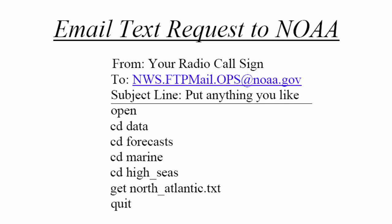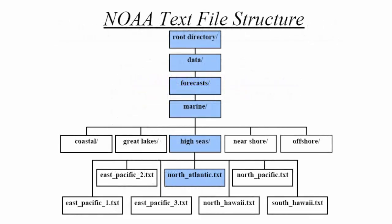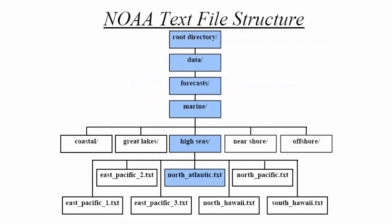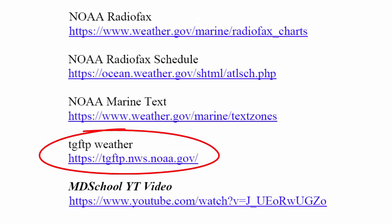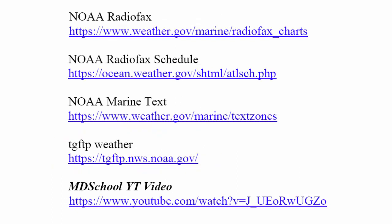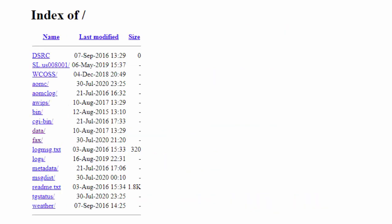Question: when you were talking about writing those emails with the very specific structure for the lines and the directory, how would we know how to write those emails? Good question. You see this one link here — TGFTP weather. You can Google 'TGFTP weather' and it's going to bring you to this website, which is part of the NOAA website. Follow me on this, because it's going to show you the structure I showed in that structure diagram.